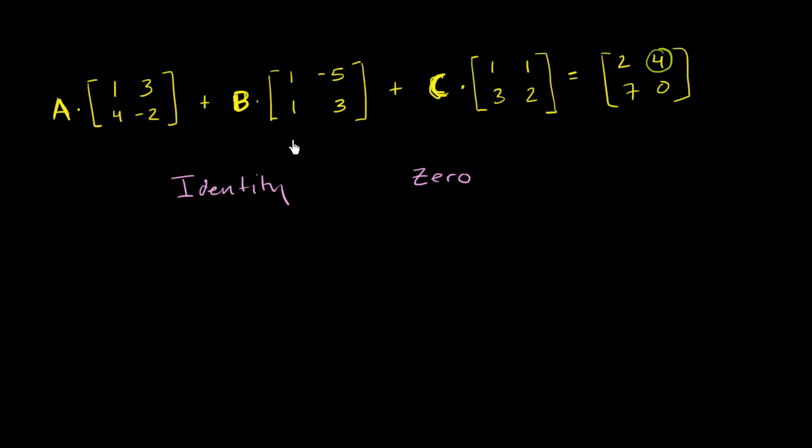So our last scenario is, we can essentially rule out B as an identity matrix, because when we had B be one of the identity matrices, and we picked the other two options, we still couldn't get to four here. So B is going to be a zero matrix, and let's see if that works out. A would be an identity, and C would be an identity matrix as well. Let's see if that actually makes sense.